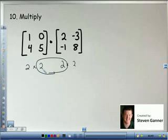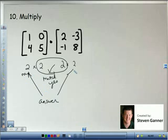Does the columns of the first match the rows of the second? Yes. So the answer is going to be 2 rows by 2 columns.